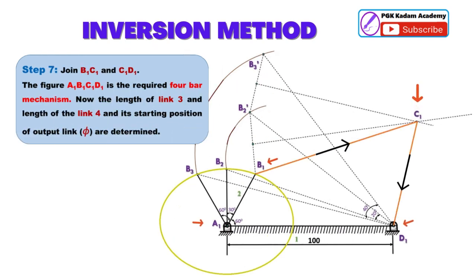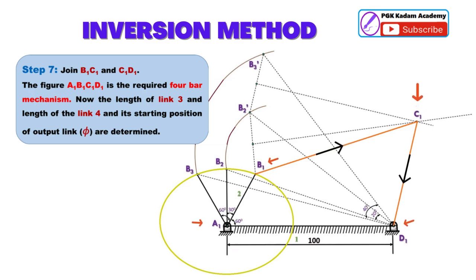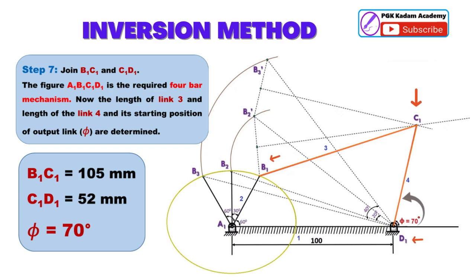Step 7: Join B1C1 and C1D1. The figure A1B1C1D1 is the required four-bar mechanism. Now the length of link 3, length of link 4, and the starting position of output link phi are determined. Hence: 1. Length of link 3, B1C1 is equal to 105 mm. 2. Length of link 4, C1D1 is equal to 52 mm. 3. Output link angle phi is equal to 70 degrees.